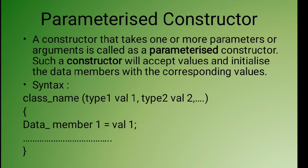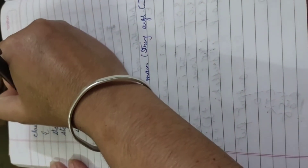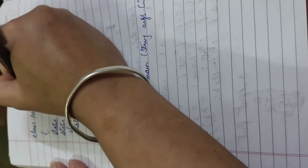Next we have the parameterized constructor. A constructor that takes one or more parameters or arguments is called a parameterized constructor. It accepts values and initializes the data members with the corresponding values. The syntax uses the class name followed by arguments like type1 variable1, type2 variable2, and so on.